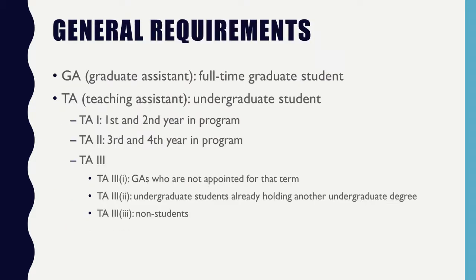To begin, here are some of the general requirements for being a GA or TA. A key difference is that GAs are graduate students, whereas TAs are undergraduate students. There are several types of TAs depending on where you are in your undergraduate career. TA1s are first or second year students, whereas TA2s are third or fourth year.